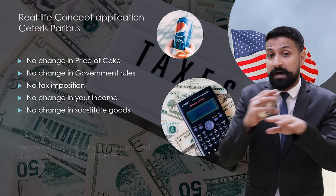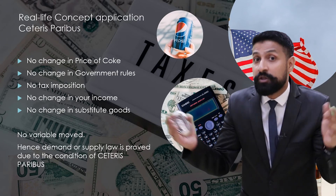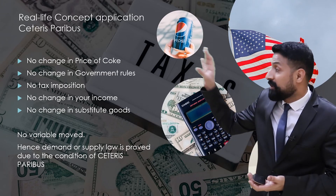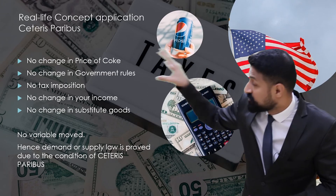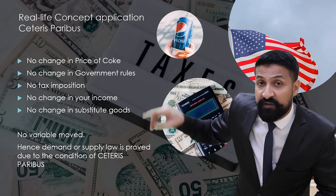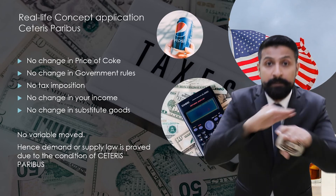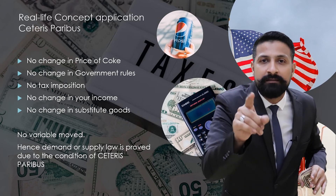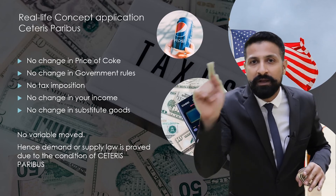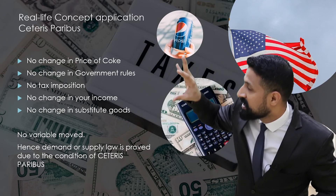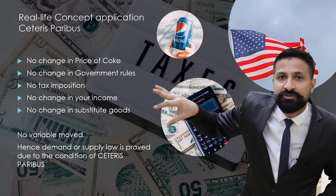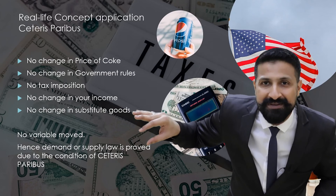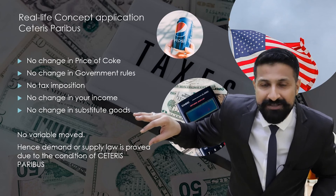And all other variables — such as tax imposition (no tax has been imposed, just for example), no new substitute good has been introduced, and so on. They say if all those factors are constant — no change in any factor — then the law of demand or supply is proved. This condition of keeping them constant is called ceteris paribus.